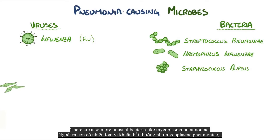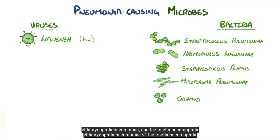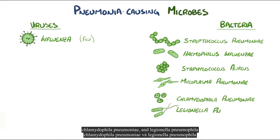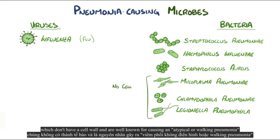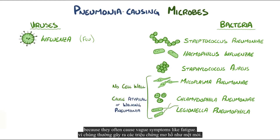There are also more unusual bacteria like Mycoplasma pneumoniae, Chlamydophila pneumoniae, and Legionella pneumophila, which don't have a cell wall and are well known for causing an atypical or walking pneumonia, because they often cause vague symptoms like fatigue.